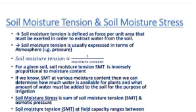Soil Moisture Tension and Soil Moisture Stress: Soil Moisture Tension is the force per unit area that must be exerted in order to extract the water from the soil. Soil Moisture Tension is usually expressed in terms of atmosphere, that is, in terms of pressure.